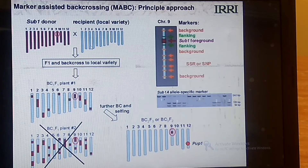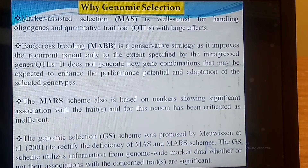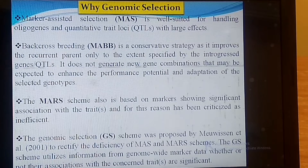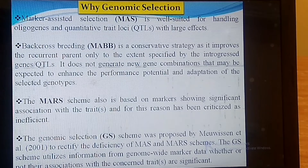The drawback of marker-assisted backcrossing is that we are not creating any new gene combinations — we are transferring only those genes which already exist in the donor variety. It improves the recurrent parent only to the extent specified by the introgressed gene or QTL present in the donor variety. It does not generate new gene combinations that may enhance the performance potential and adaptation of the selected genotype. This is the drawback of marker-assisted backcrossing.